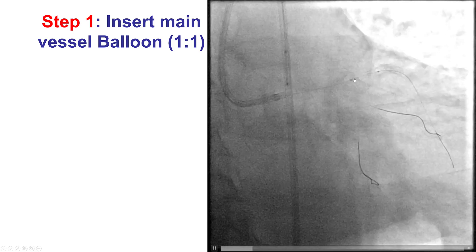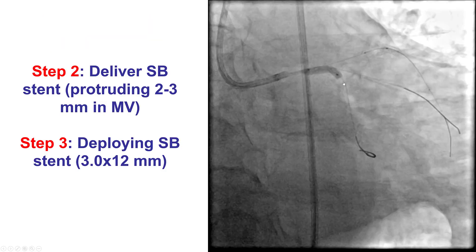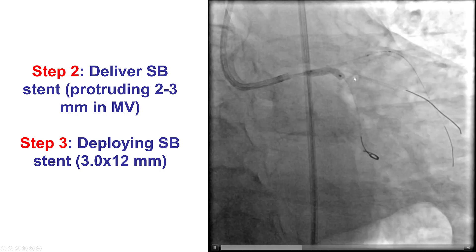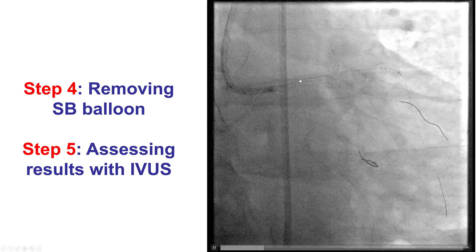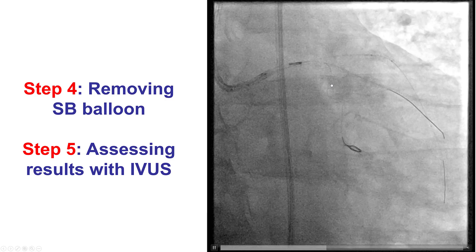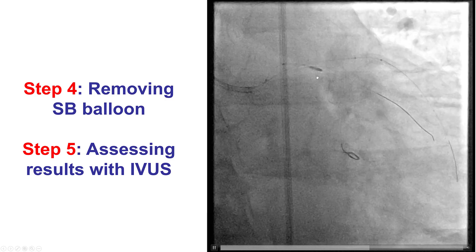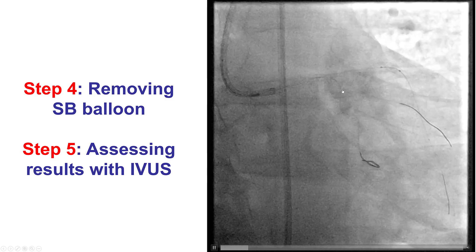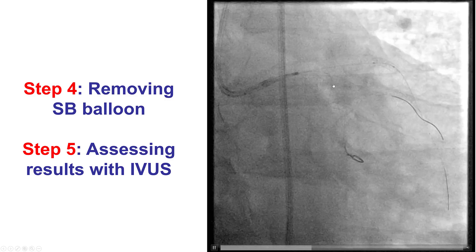We then inserted a balloon into the main vessel. We delivered a side branch stent into the circumflex and it was deployed. There was an early obtuse marginal that was of significant size, which is why it was protected using another guide wire. After the stent was deployed in the side branch, we pulled back the balloon and did high-pressure post-dilatation. We then used intravascular ultrasound instead of a contrast injection to check the circumflex result, and we were able to see preserved flow into the obtuse marginal branch.